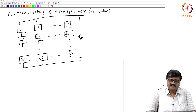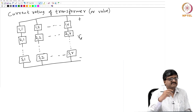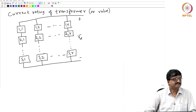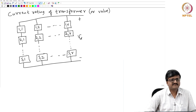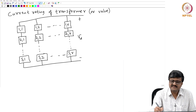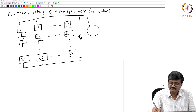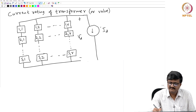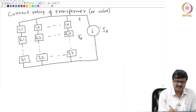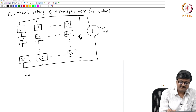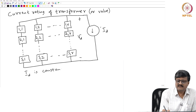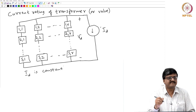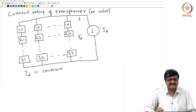On the DC side, I make one assumption: there is a large filter — say an inductor — which acts as a current filter. Due to this, for simplicity, I can represent the DC side current as a constant current id. This assumption of constant id is justified if I use an inductor on the DC side.